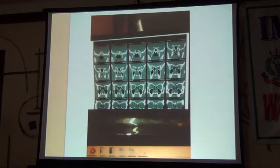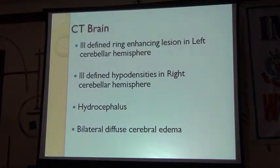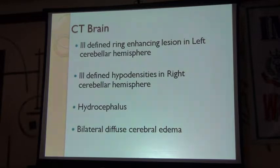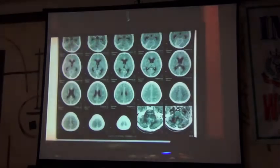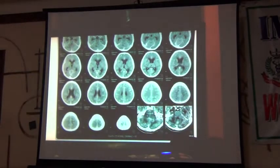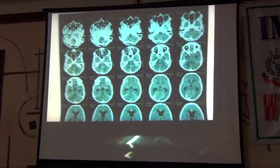Then we went on to taking CT brain, which showed an ill-defined ring-enhancing lesion in the right cerebral hemisphere. Ill-defined hypodensities in the right cerebral hemisphere. Hydrocephalus, bilateral diffuse cerebral edema. My request was to Dr. Vidal Sai to give the interpretations.